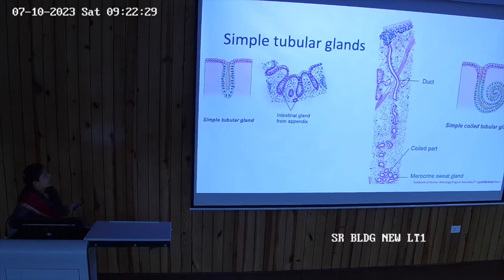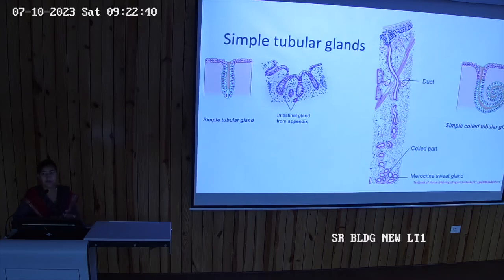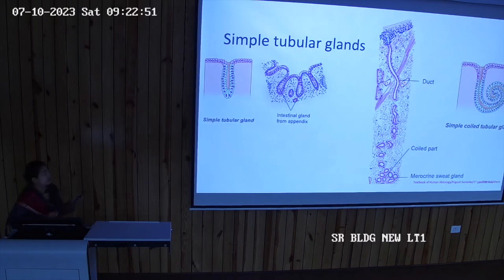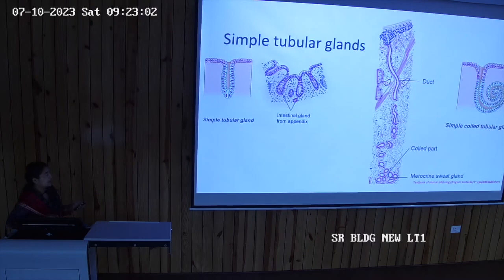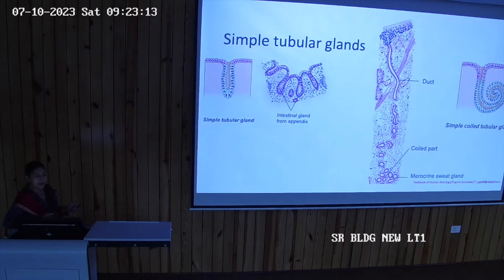In simple tubular glands, the secretory unit is tubular in shape and there is a single unbranched duct. In histological slides, the folded epithelium shows a lower part embedded in connective tissue forming the tubular secretory unit, and the part connecting to the surface epithelium is the duct. Simple tubular glands are mostly found in the GIT.